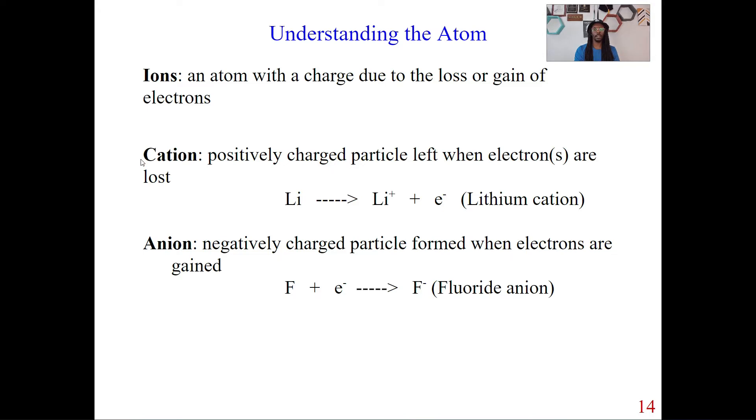So a cation is a positively charged particle left when electrons are lost. So basically, let's think about lithium. So lithium, the atom, we just got that going on here. And then let's say that lithium, the atom, loses the electron.